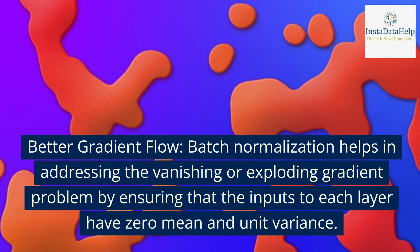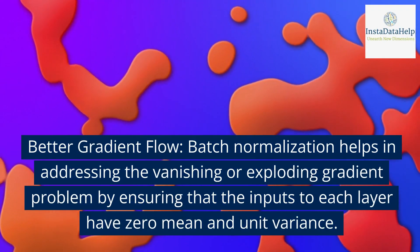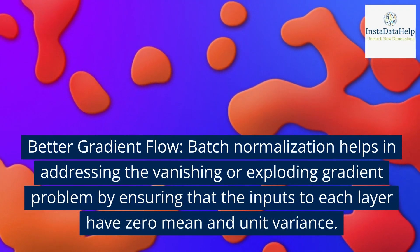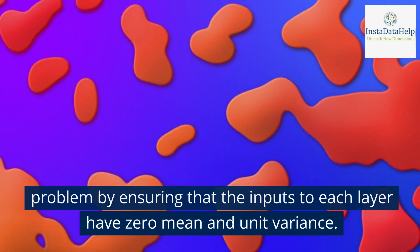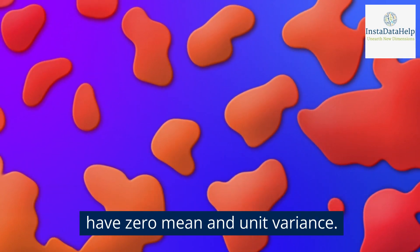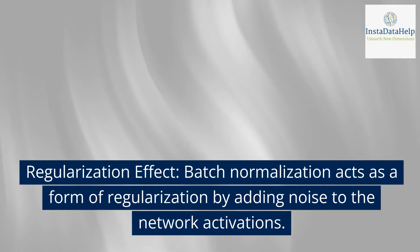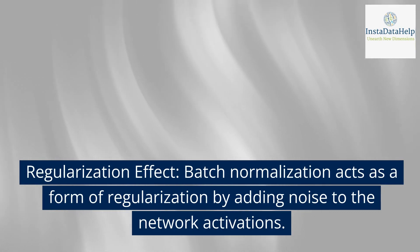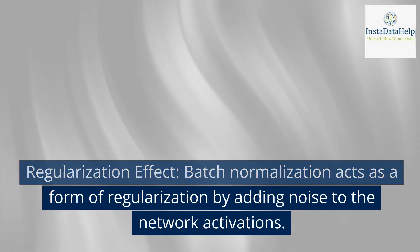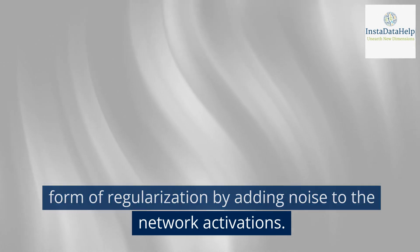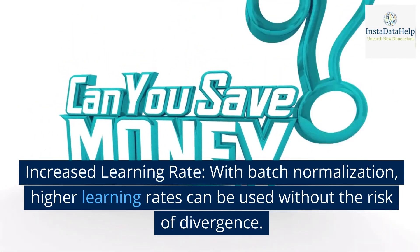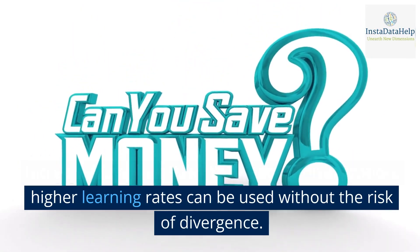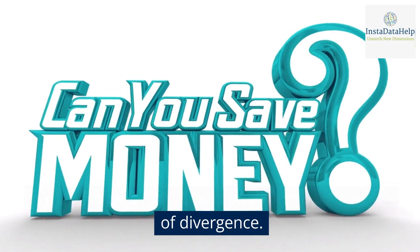Better gradient flow: batch normalization helps in addressing the vanishing or exploding gradient problem by ensuring that the inputs to each layer have zero mean and unit variance. Regularization effect: batch normalization acts as a form of regularization by adding noise to the network activations. Increased learning rate: with batch normalization, higher learning rates can be used without the risk of divergence.